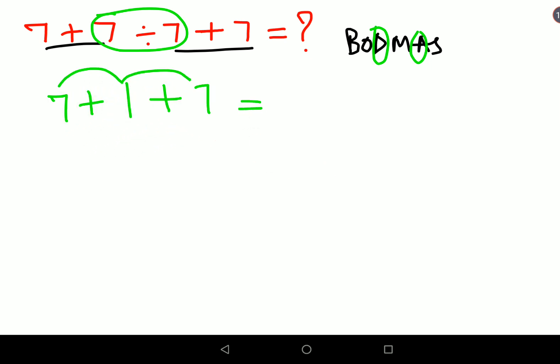So that, my dear friends, is the answer for this one. But please understand, don't make the mistake of taking the answer as 1 for this one. If you think the answer should be 1, then technically the question should have been written in this format: 7 plus 7 in a bracket, divided by 7 plus 7.